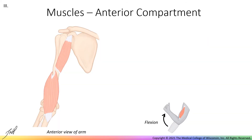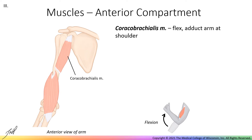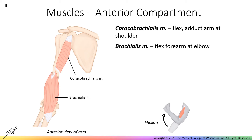Now let's talk about each muscle of the arm individually. The anterior compartment of the arm has three muscles. The coracobrachialis muscle attaches to the coracoid process of the scapula and shaft of the humerus. When it contracts, it flexes and adducts the arm at the shoulder. Brachialis attaches to the shaft of the humerus and the coronoid process of the ulna. Contraction leads to flexion at the elbow.